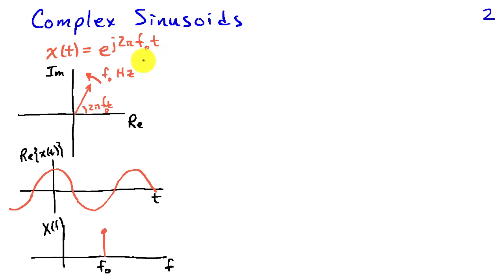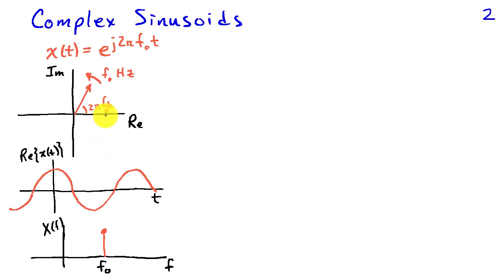We'll define a complex sinusoid e to the j 2 pi f0 t. In the complex plane, this sinusoid can be visualized as a vector that's rotating at f0 hertz, or f0 complete revolutions per second. If I look at the projection on the real axis, then I have a cosine, and the spectrum of this complex exponential is a single component at frequency f0.